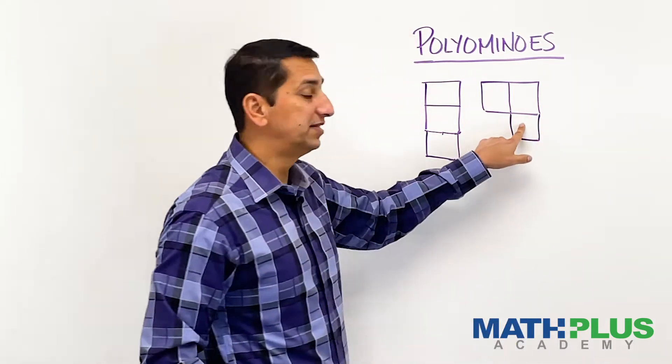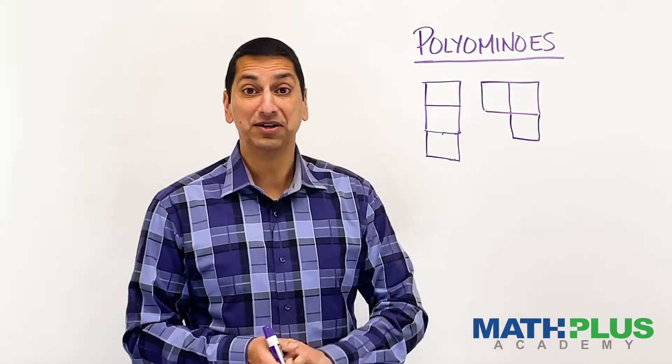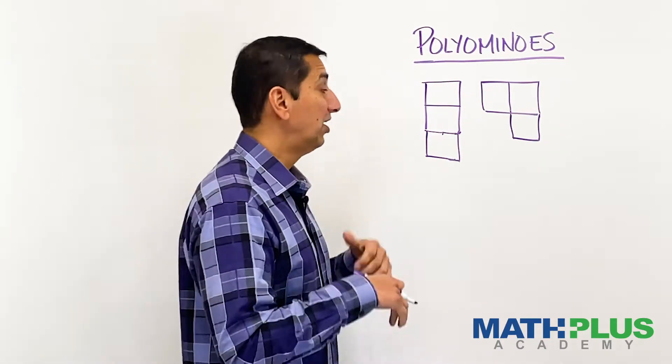This one, same size as the other two, shares an edge. That is a triomino. Clearly not the same as that one. We found at least two different kinds of triominoes. Are there any more?